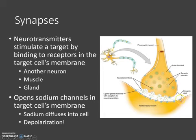it might be a muscle, it might be a gland. What happens is that this neurotransmitter binds to a receptor in these gated channels and it opens them up.